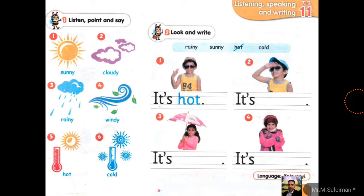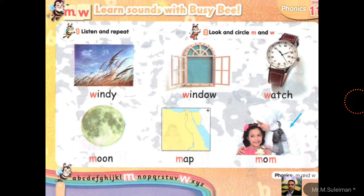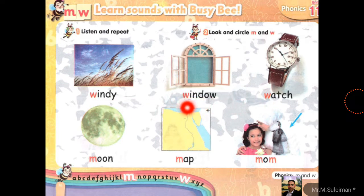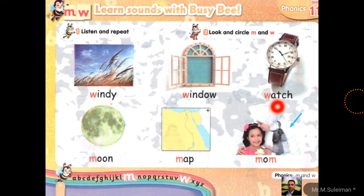Excellent! Next: listen and learn sounds with Busy. We have letter W. We can pronounce it as 'w'. After me: windy, window, watch. Excellent! Windy, window, watch. Again — read it. It's your turn. Excellent!